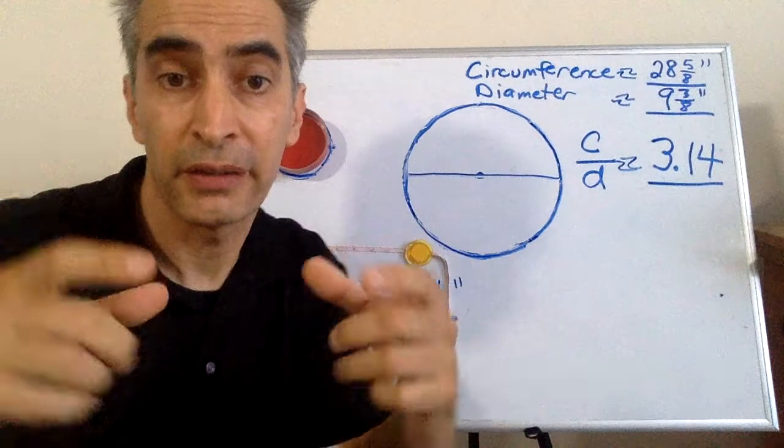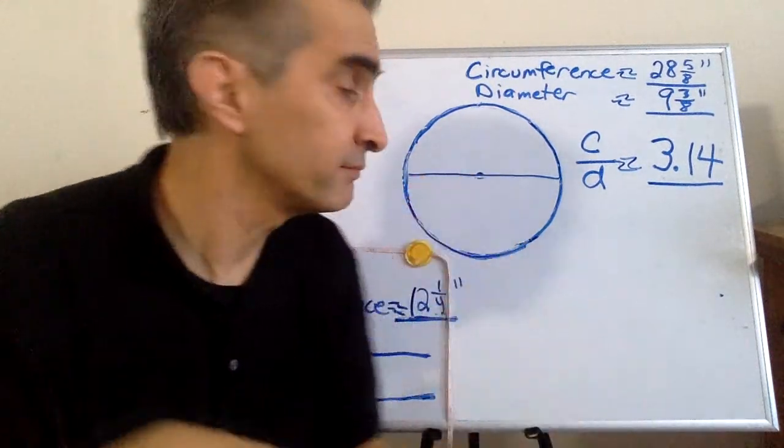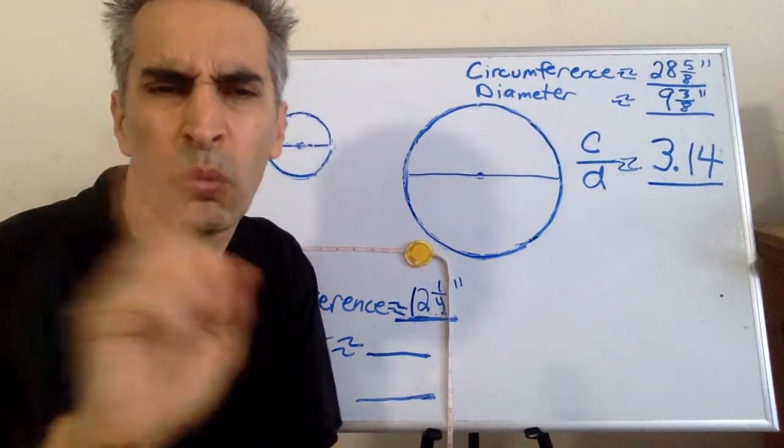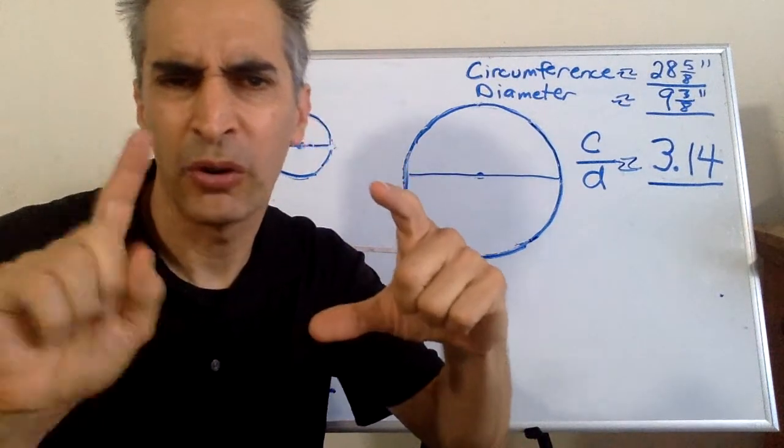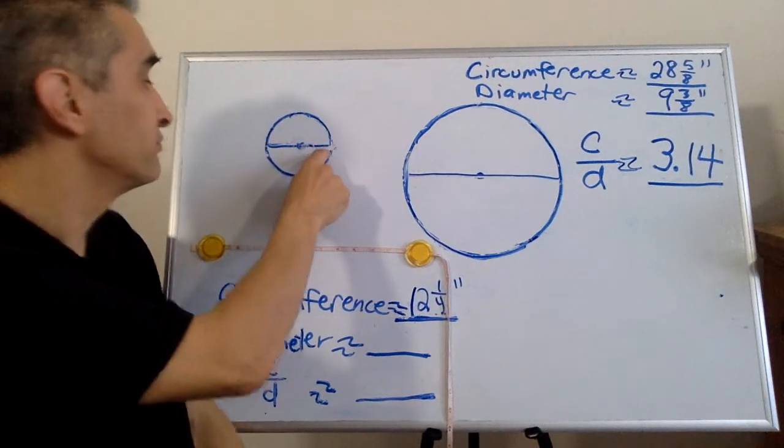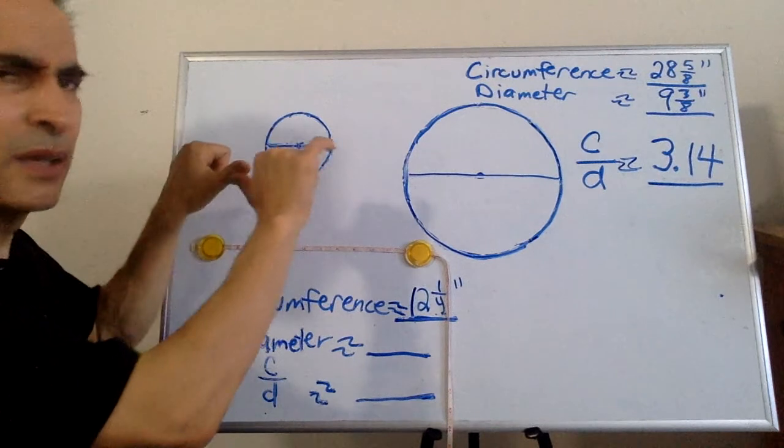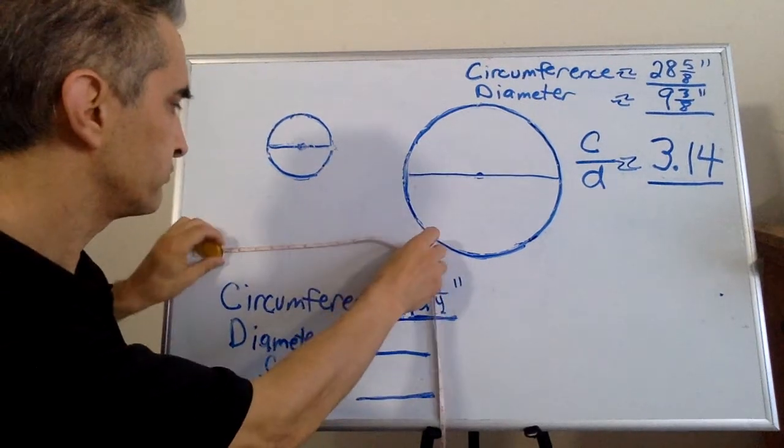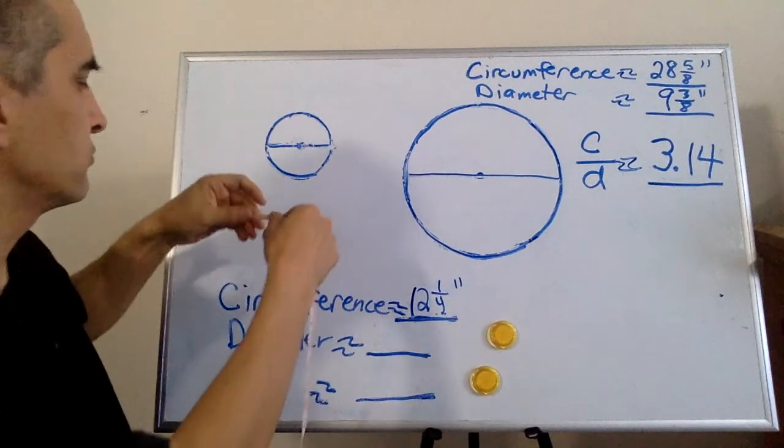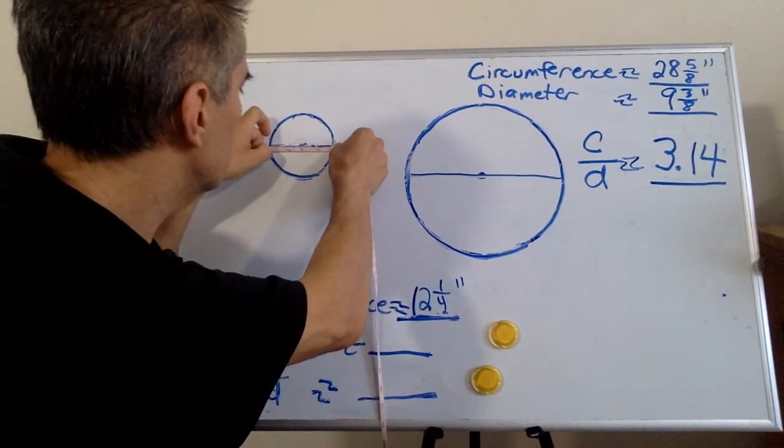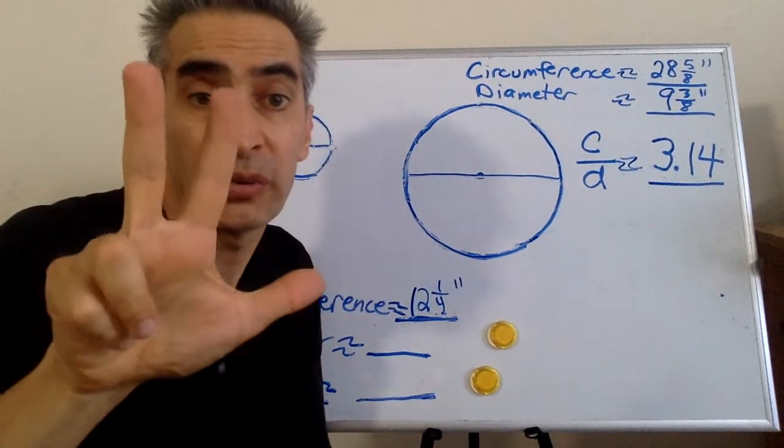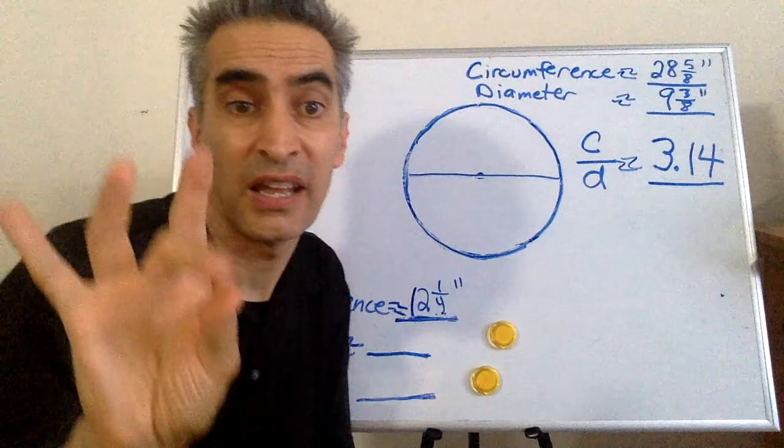Next, measure the diameter. Where's the diameter? This line right here. Measure that line is around 3 and 7 eighths inches.